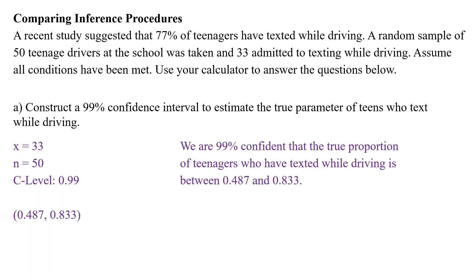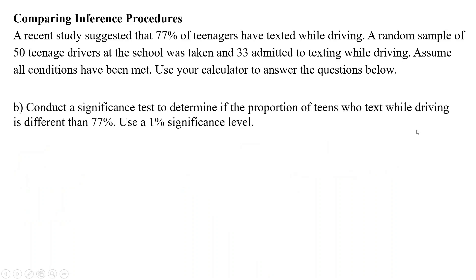We are 99% confident that the true proportion of teenagers who have texted while driving is between 0.487 and 0.833. When constructing the confidence interval, we didn't use the 77% at all because it's what a study has already suggested — it's not actually what's going on in our sample proportion. We are going to use that 77% for part B, where we are going to conduct a significance test to determine if the proportion of teens who text while driving is different than 77%.